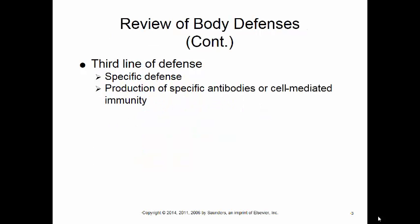And then finally, our third line of defense is a specific defense. This is the part that actually produces specific antibodies or cell-mediated immunity to fight off specific pathogens. For example, we become immune to chicken pox after having it, or we use the chicken pox vaccine to produce these specific antibodies. The third line is the only one that's specific and the only one that provides long-term immunity.